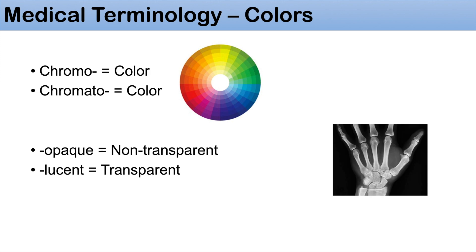The reason I wanted us to discuss opaque and lucent is when we use them in x-rays and imaging. Radio opaque is something that is bright, while radio lucent is transparent — the x-rays go right through it. Another term to quickly cover is the prefix photo, which stands for light. You can think of photon or photography, all related to the prefix photo meaning light.